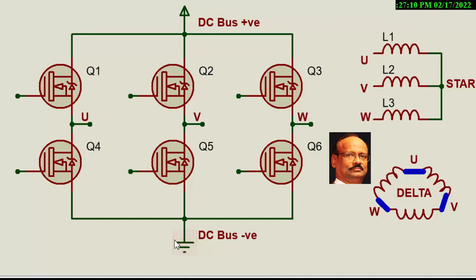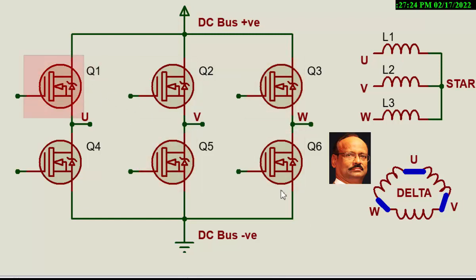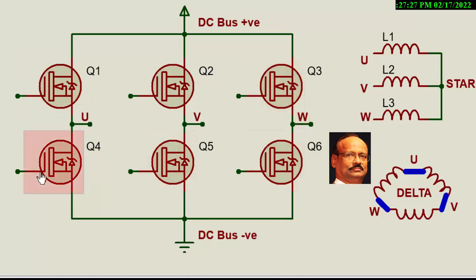This is as far as the single-phase consideration is concerned. In three phase, the same thing happens. So the next arrangements would be Q2 and Q6, then Q3 and Q5, then Q1 and Q6, and Q3 and Q4. This is how the basic circuit works.